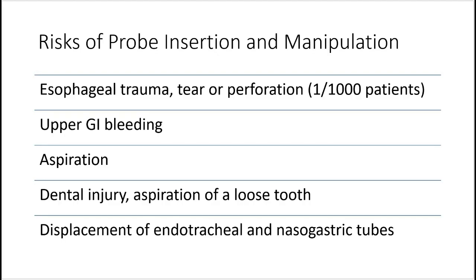These are the risks of TEE. Since we are putting a TEE probe down the mouth and into the esophagus, and it's a blunt instrument, there's a small chance of esophageal trauma, tear, or perforation in about one in a thousand patients, risk of upper GI bleeding, aspiration, dental injury, or aspiration of a loose tooth.